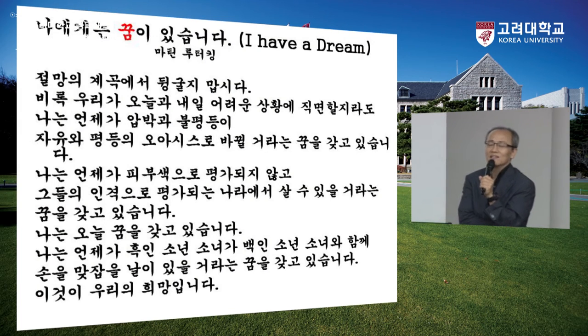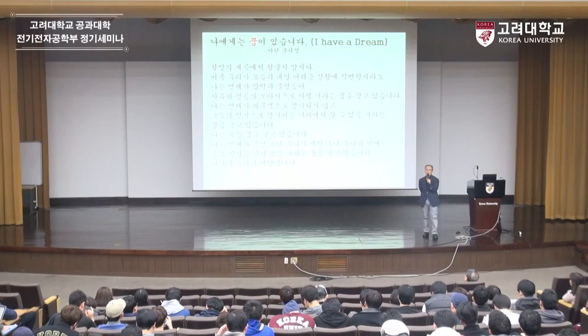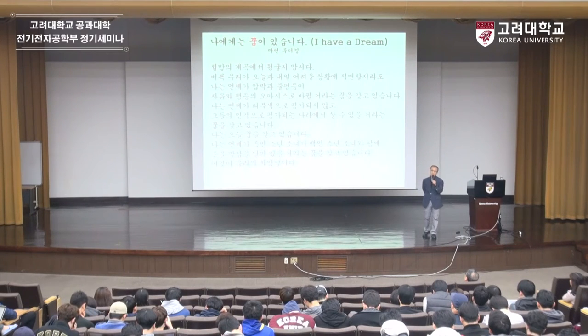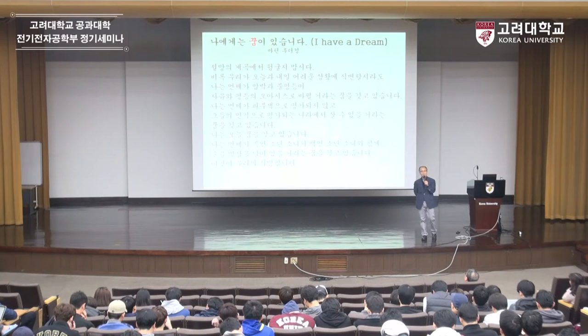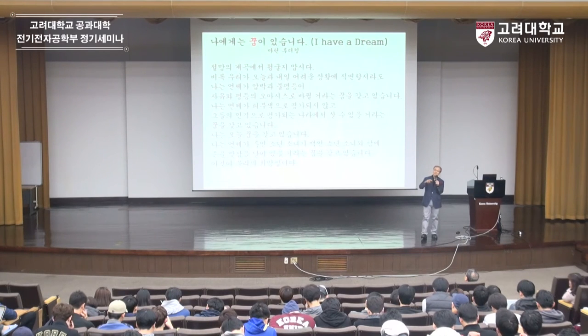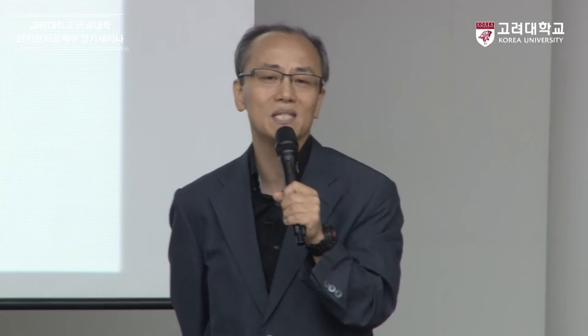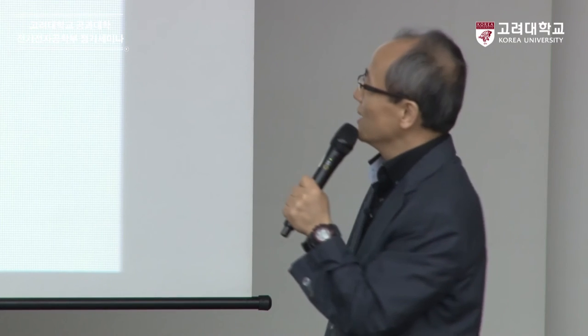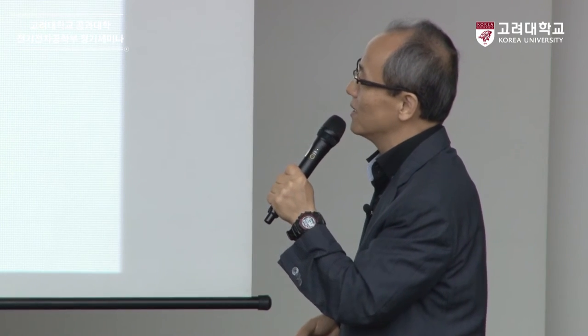마틴 루터킹 목사의 'I have a dream'입니다. 마틴 루터킹 목사가 이 연설을 했을 때 그때의 미국이라는 상황은 지금의 대한민국보다 더 암울한 상황이었죠. 그러나 그에게는 꿈이 있었습니다. 흑인과 백인이 차별하지 않는 세상을 꿈을 꿨고, 지금도 차별이 많지만 나아졌잖아요. 오늘 우리에게도 나는 꿈을 갖고 있습니다 라고 말하고 싶어요. 요즘 같은 세상이 무슨 꿈이냐 하겠지만, 우리는 꿈을 꿔야 되지 않을까요?